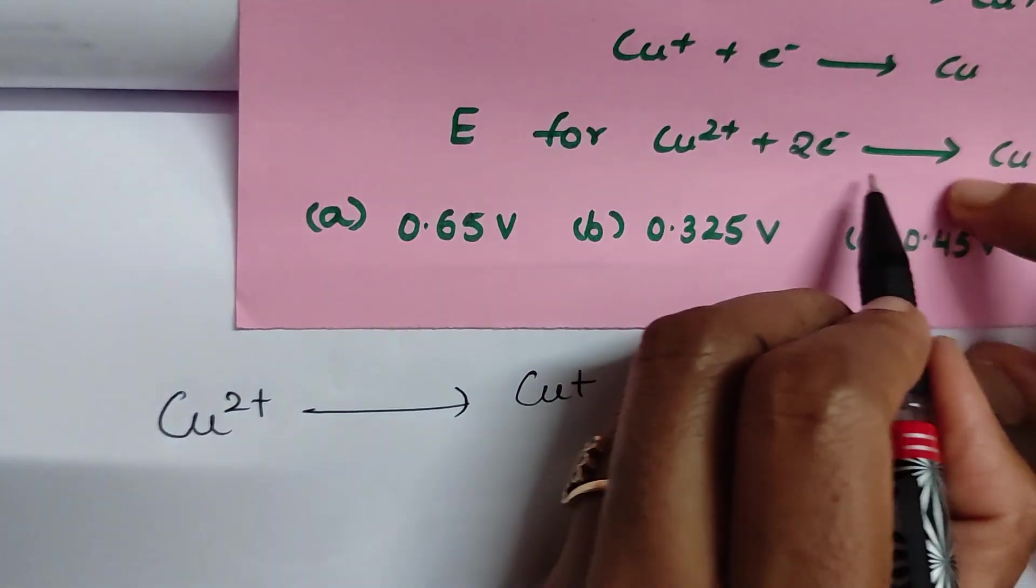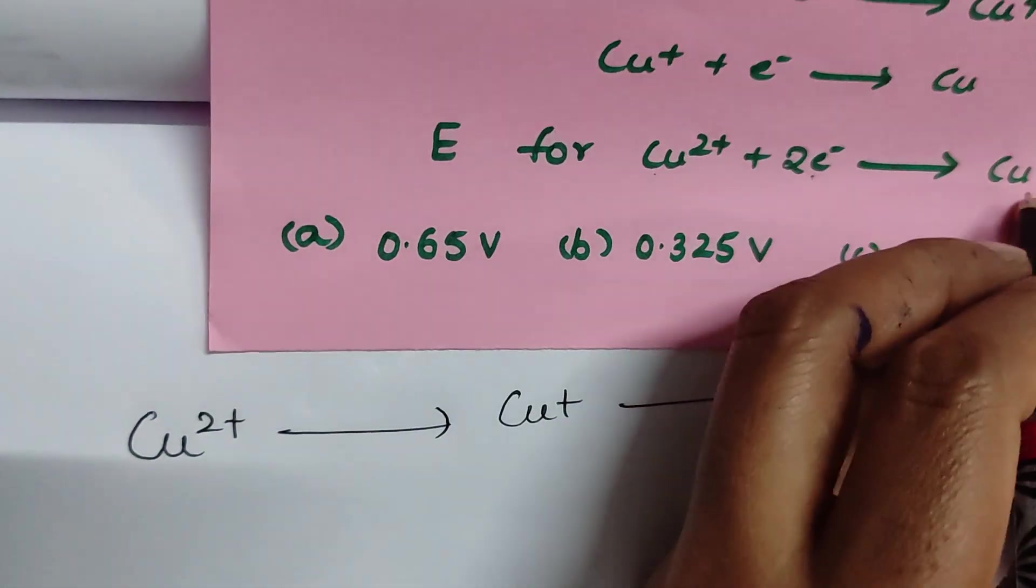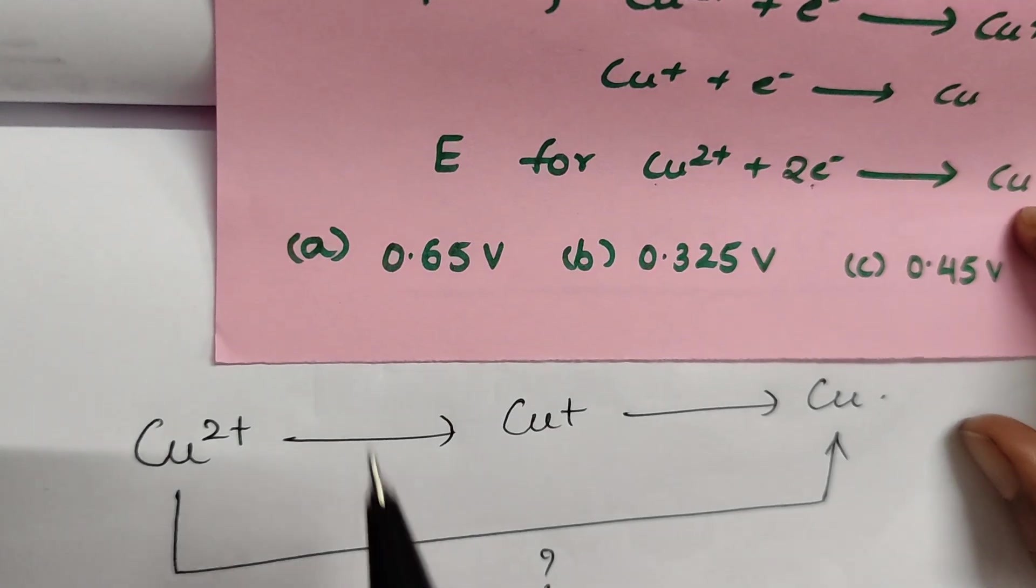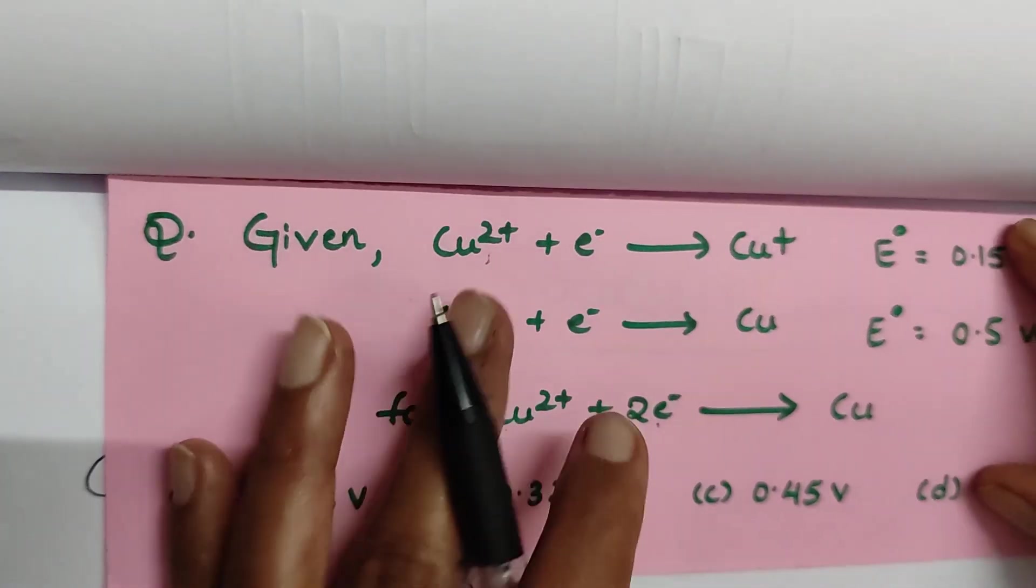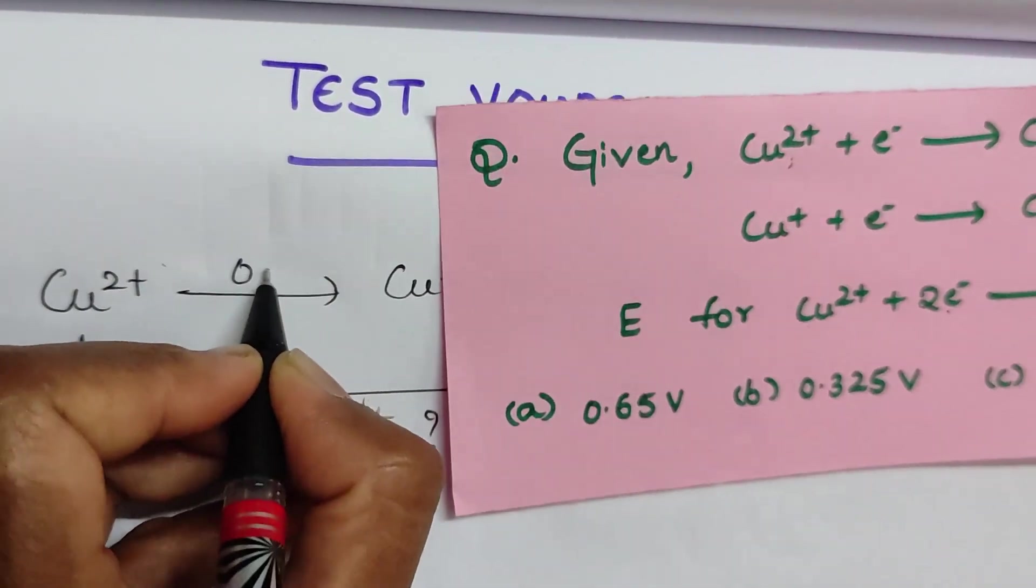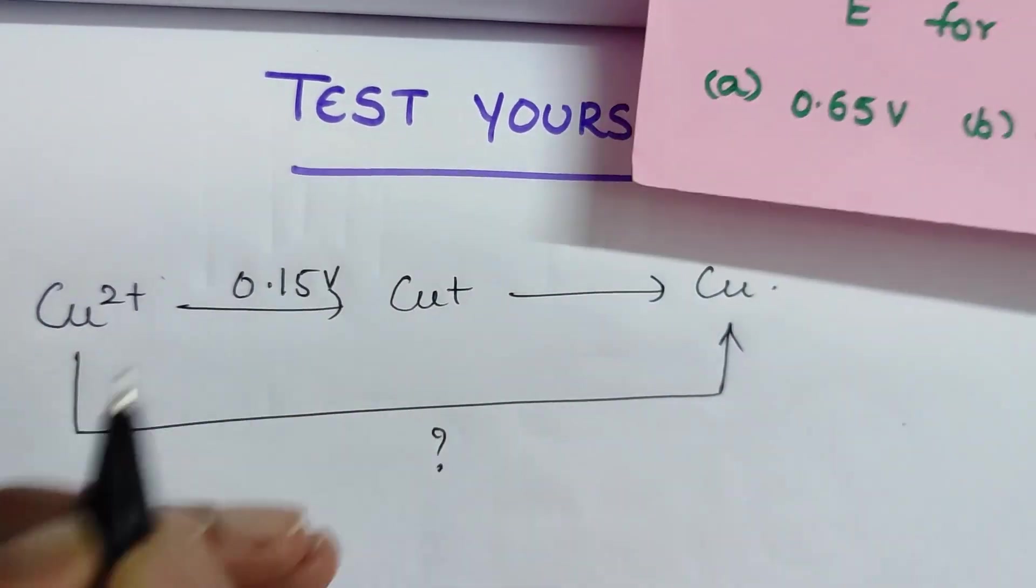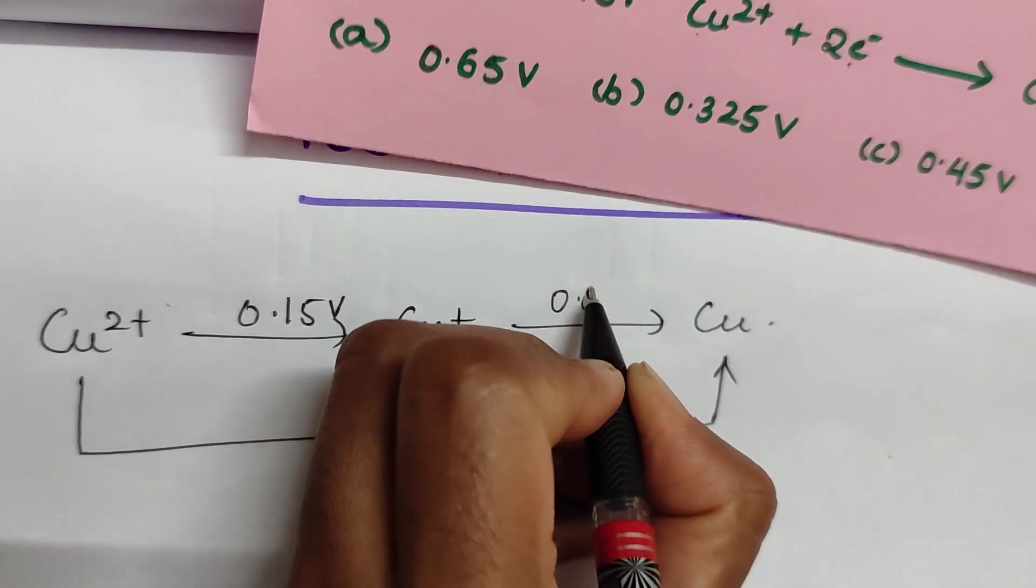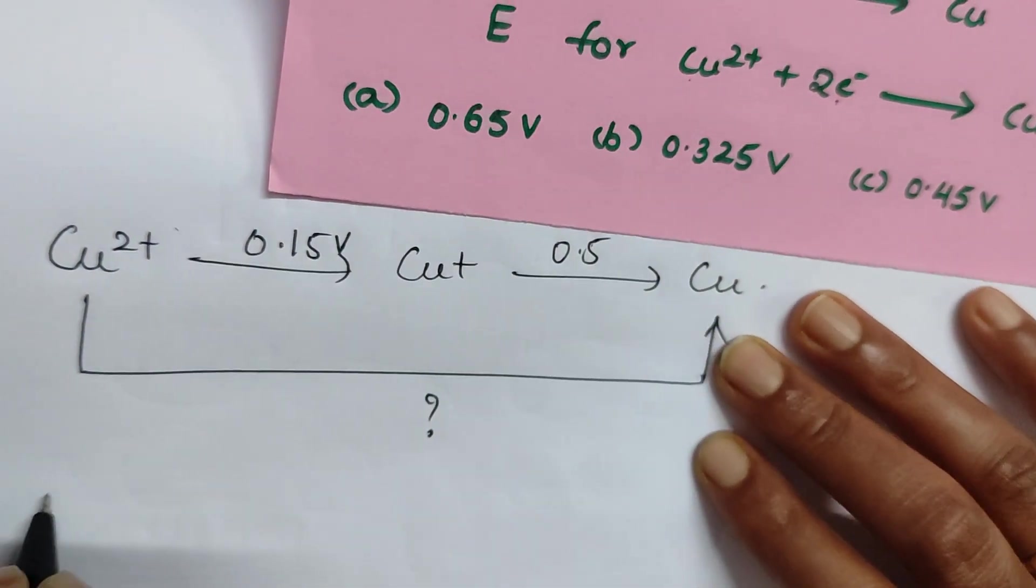Check what they're asking: Cu²⁺ to Cu. They're asking us Cu²⁺ is converting into Cu⁺. So from here to here it is 0.15 volt as per the question. Cu⁺ is converting into Cu at 0.5 volt.